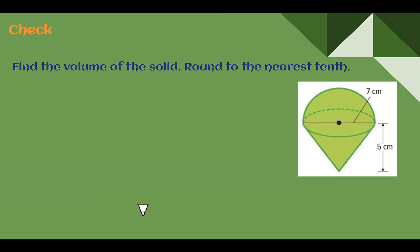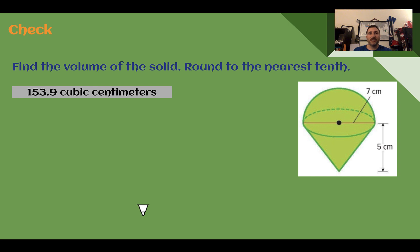Check your understanding. Find the volume of this solid, round to the nearest tenth. Pause the video now and complete the check. Check your answer. You should have said 153.9 cubic centimeters, or you could have done centimeters to the third power. Here we have a cone and we have half of a sphere, so a hemisphere.